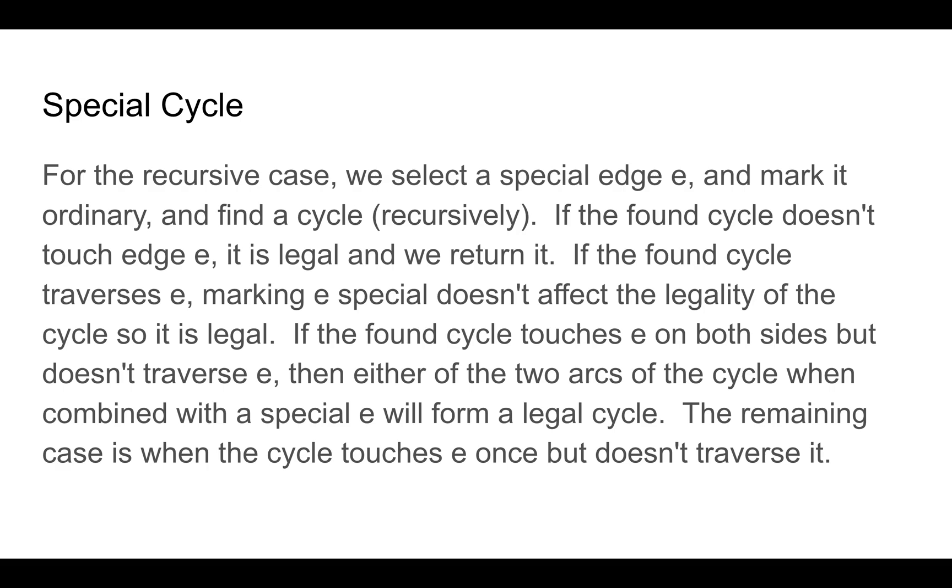If the found cycle touches e on both sides but doesn't traverse e, then either of the two arcs of the cycle when combined with e forms a legal cycle which we can then return.